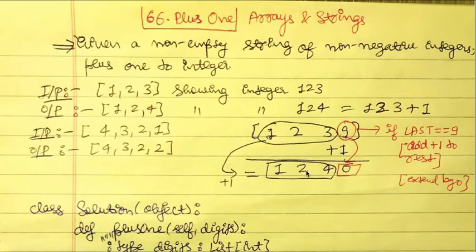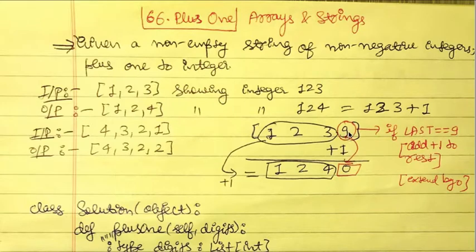Now consider the case of multiple nines: [1, 2, 9, 9] representing 1299. We check the last digit — it is nine — so we add one to the previous digits [1, 2, 9]. That last digit is also nine, so we recurse again on [1, 2], adding one to get [1, 3], then extend by zero for each nine we encountered. So 1299 plus one becomes 1300, represented as [1, 3, 0, 0].